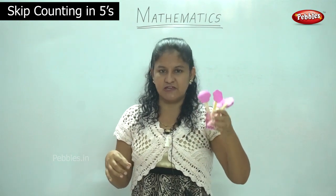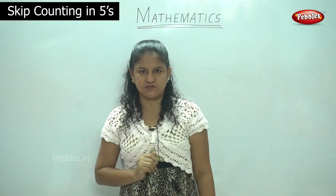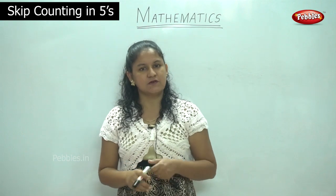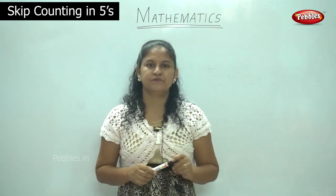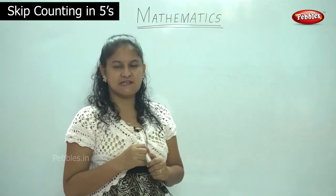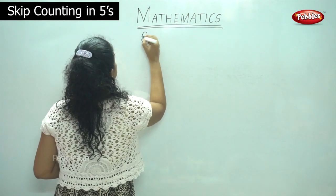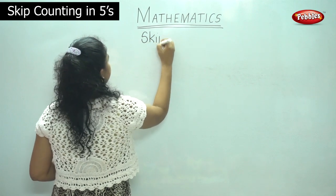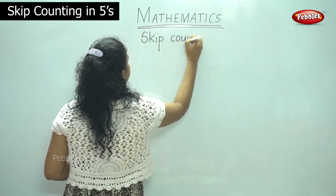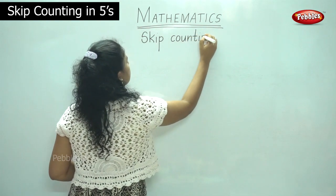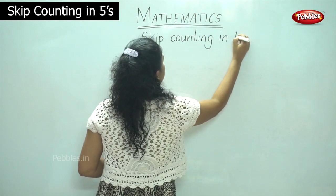So I have grouped it into 5 each and I have 5 cups which comes to 25 ice creams. So today by learning counting in fives we will learn the table of 5. So shall we do the skip counting in fives.